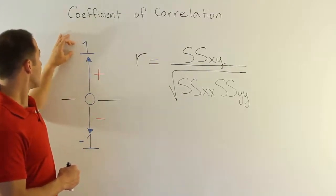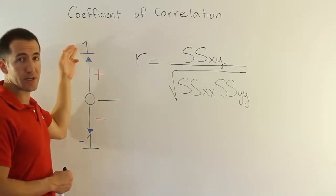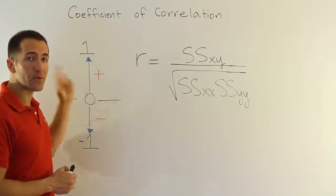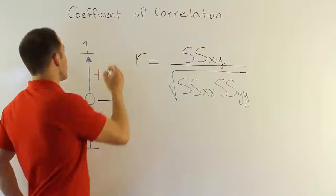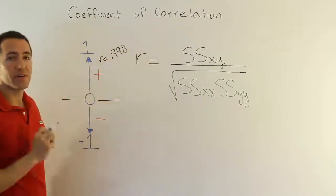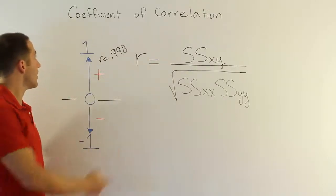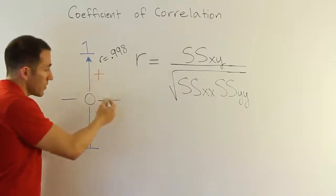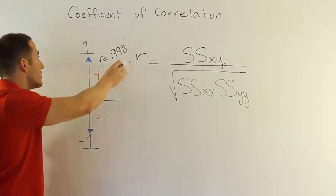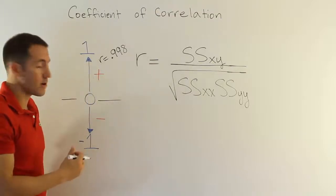So 1 is sort of the perfect scenario, the idealized scenario that you usually would never achieve. But any number close to 1 is going to indicate really strong positive correlation. So say for example if r was equal to 0.998, that would be a very strong positive linear relationship between x and y. Now from there you go down, and of course we can get all the way down to 0, but all those represent positive linear relationships. And the strength of it is determined by how close that is to 1. The higher it is, the closer towards 1, the more strong it is.